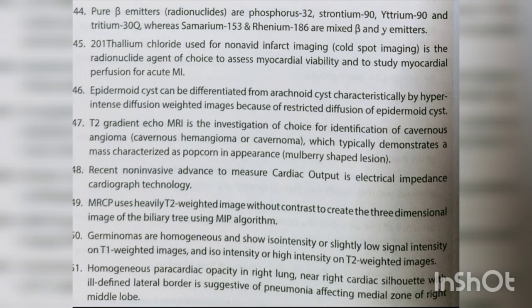Pure beta emitters — phosphorus-32, strontium-90, yttrium-90, and tritium. Samarium-153 and rhenium-186 are mixed beta and gamma emitters. Thallium-201 chloride — used for non-avid infarct imaging (cold spot imaging) and is the radionuclide agent of choice to assess myocardial viability and myocardial perfusion for acute MI. Epidermoid cyst can be differentiated from arachnoid cyst by hyperintense diffusion-weighted images due to restricted diffusion of epidermoid cyst.